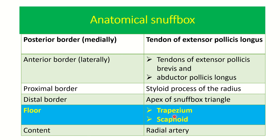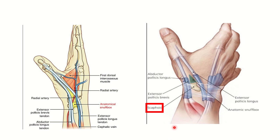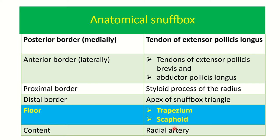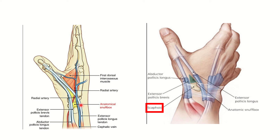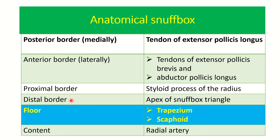These two important bones — trapezium and scaphoid — form the floor of the anatomical snuffbox. The content of the snuffbox is the radial artery. However, as we saw in the picture, the cephalic vein also crosses the anatomical snuffbox. The cephalic vein is the most superficial vein — it is not a content but crosses over the snuffbox, whereas the radial artery lies deep within the snuffbox.